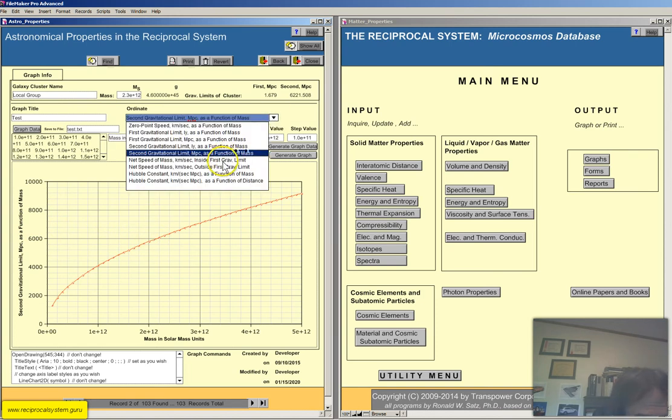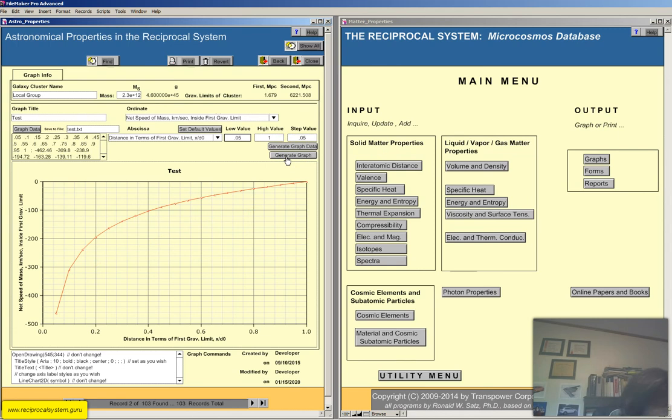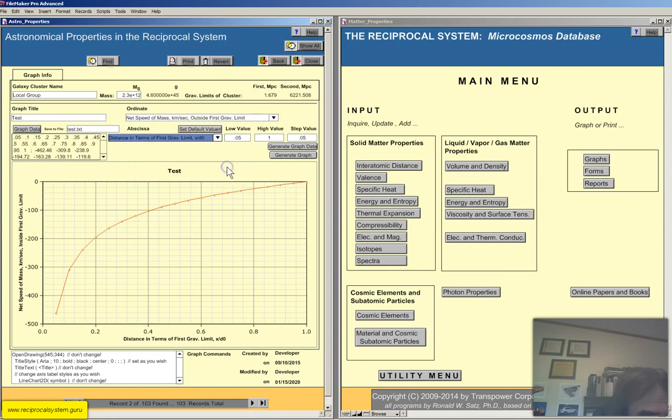So let's go to the next one. Speed of mass inside of first gravitational limit. Let's see what this does. So this is the net speed of the mass within the first gravitational limit in terms of the first gravitational limit x over d0. So obviously within the first gravitational limit, it's going to be a negative velocity coming in. That's why these numbers are negative here.